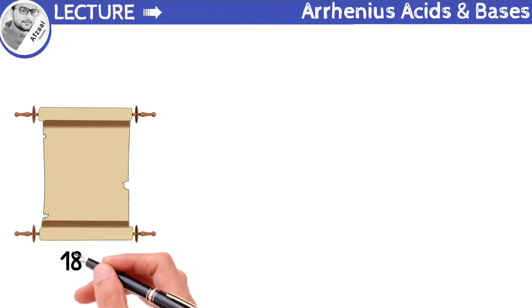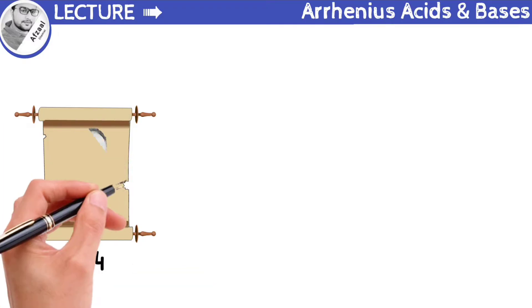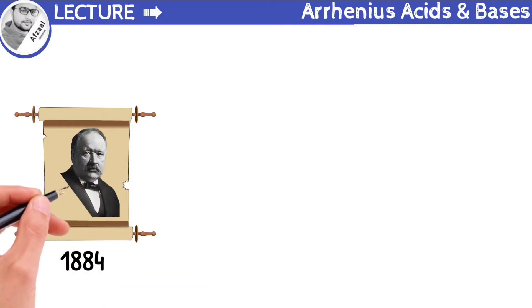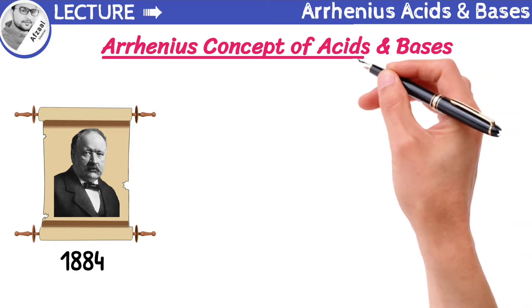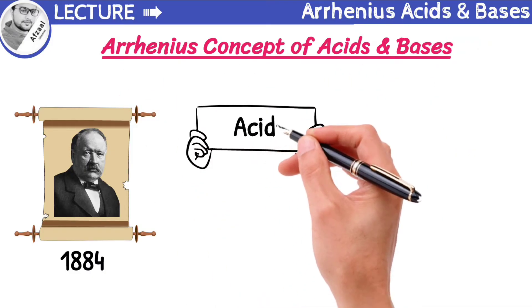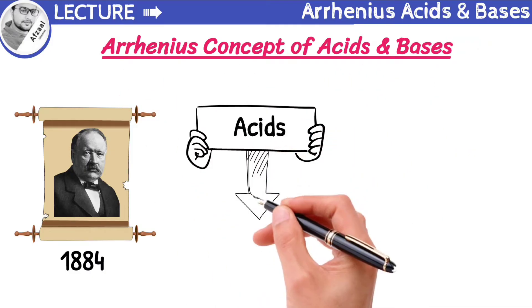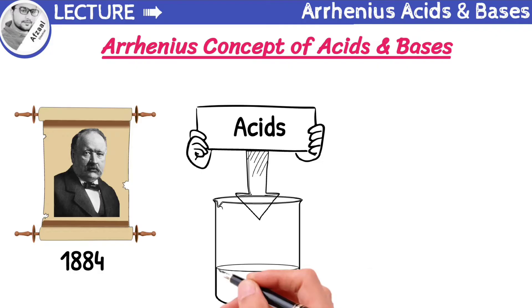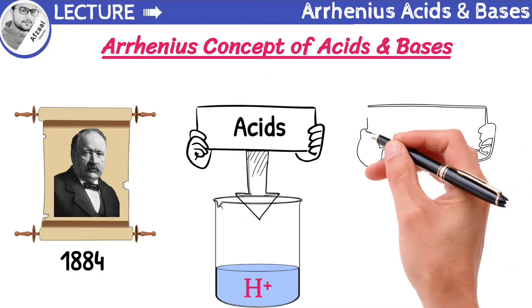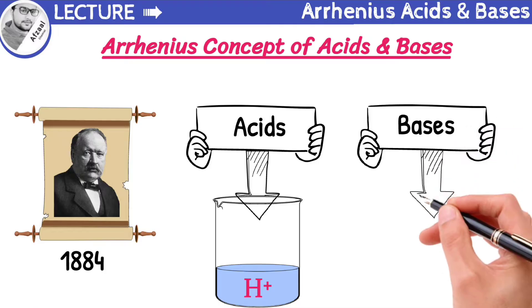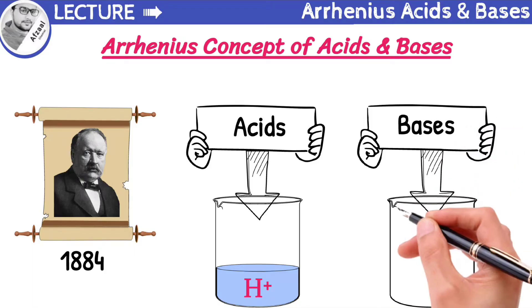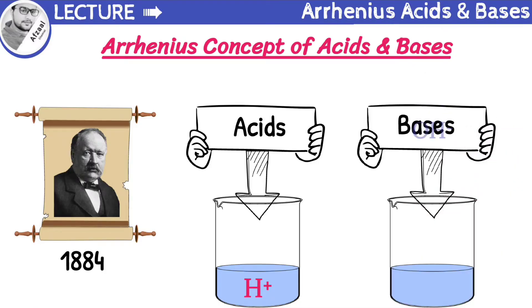In 1884, Swedish chemist Svante Arrhenius proposed the concept of acid and base based on the theory of ionization. According to Arrhenius, acids are the hydrogen-containing compounds which give H⁺ ions on dissociation in water. On the other hand, bases are the compounds which give OH⁻ ions on dissociation in water.